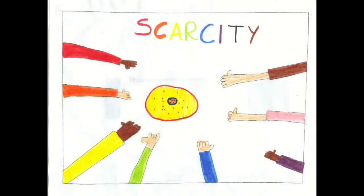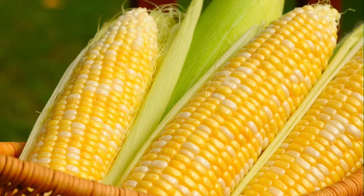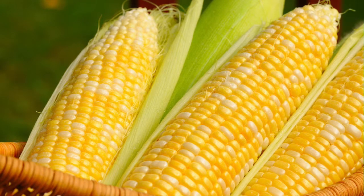Scarcity is defined as the basic problem on which classical economic theory is built, or in other words, the theory that human wants will always exceed the resources available to fulfill those wants. An example of scarcity is that after poor weather, corn crops cannot grow, resulting in scarcity of food for people and animals and ethanol for fuel.